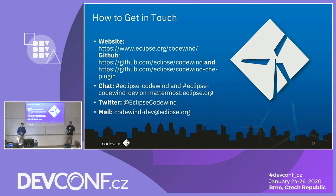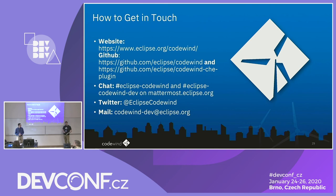Regarding what languages Codewind is written in: it's a mix. The build engine is written in TypeScript, as well as the VS Code and Theia extensions — TypeScript is the majority. Some commands are written in Go, and a small legacy portion is written in Java in terms of the build engine. The Eclipse plugin itself is entirely Java. There's a range of languages involved — probably too many — but the Eclipse IDE plugin is not the legacy part.